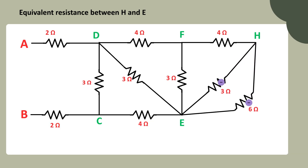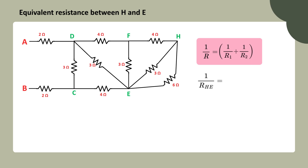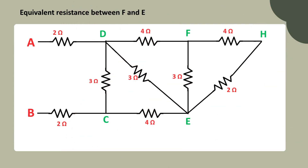Take a closer look at the path between H and E. The current splits and flows through two separate resistors — one is 3 ohms and the other is 6 ohms. Since the current is dividing between them, these resistors are connected in parallel. When resistors are connected in parallel, we use the formula: 1 over R equivalent equals 1 over R1 plus 1 over R2. Substituting the values: 1 over 3 plus 1 over 6 gives us 3 over 6. Taking the reciprocal, the equivalent resistance between H and E equals 2 ohms. Now let's simplify the circuit by replacing the 3 ohm and 6 ohm resistors with their equivalent 2 ohm resistor.